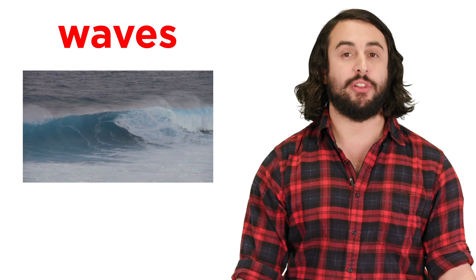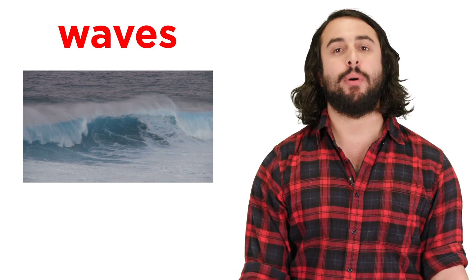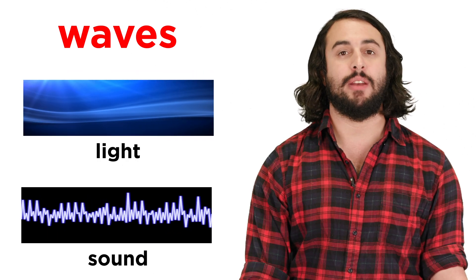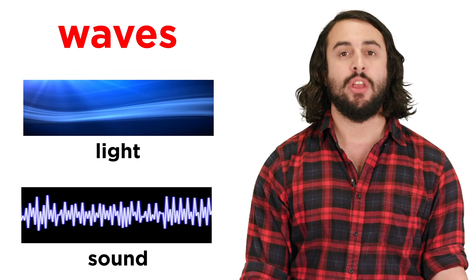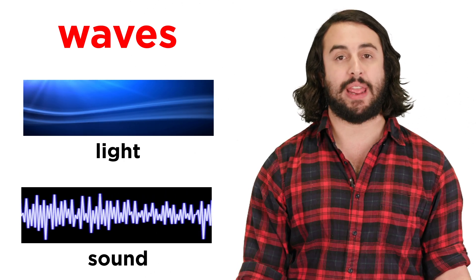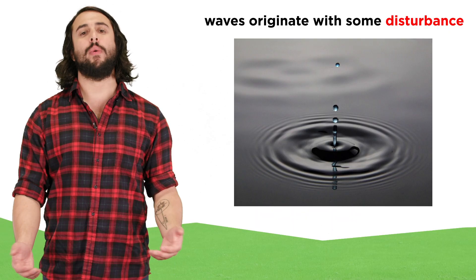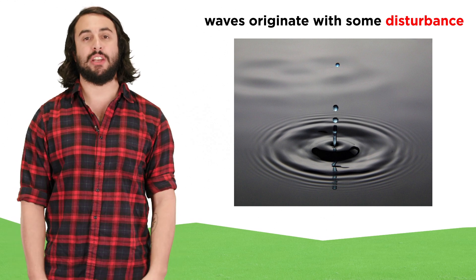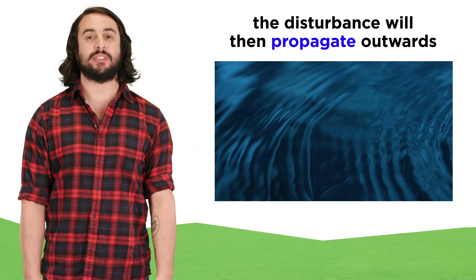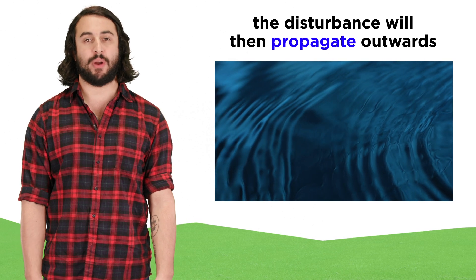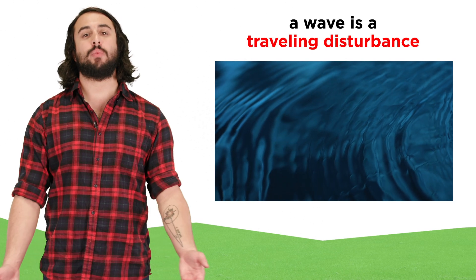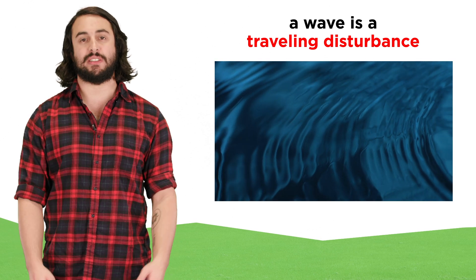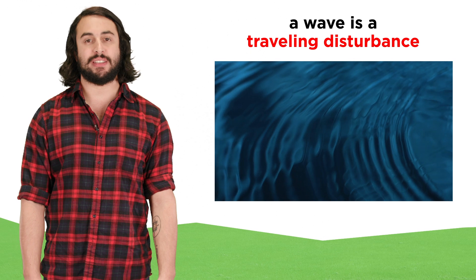These should be quite familiar if you've ever been to the beach, but those aren't the only kinds of waves. Light and sound can both be considered waves as well, so we will need to learn about the properties of waves. Waves always originate with some event or disturbance, like a pebble falling into a pond, and this disturbance will then propagate outwards. In this way, we can consider any wave to be a kind of traveling disturbance that carries energy from place to place.